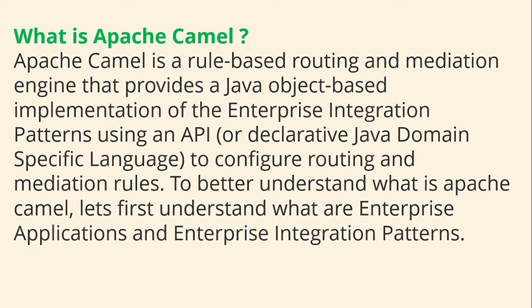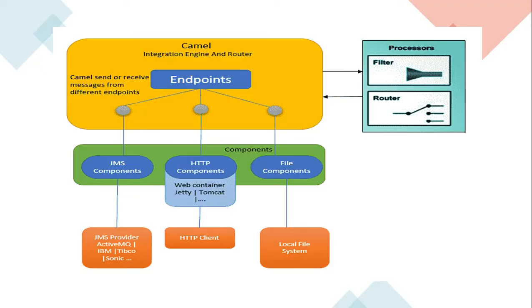To better understand what Apache Camel is, let's first understand what enterprise applications and enterprise integration patterns are. Apache Camel can integrate with multiple endpoints — it can have JMS components, HTTP components, or file components. Multiple components can be there, and Apache Camel can process them; there is a filter and a router involved in Apache Camel.